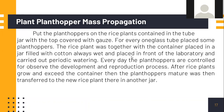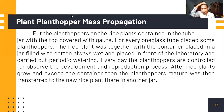For plant hopper mass propagation, plant hoppers are placed on rice plants contained in tubes covered with gauze. For each glass, some plant hoppers are placed. The rice plant, together with the container, is placed in a chair filled with always-wet cotton and placed in front of the laboratory. Observations are carried out periodically every day to observe the development and reproduction process. Once rice plants exceed the container, the mature plant hoppers are transferred to a new rice plant in another container.